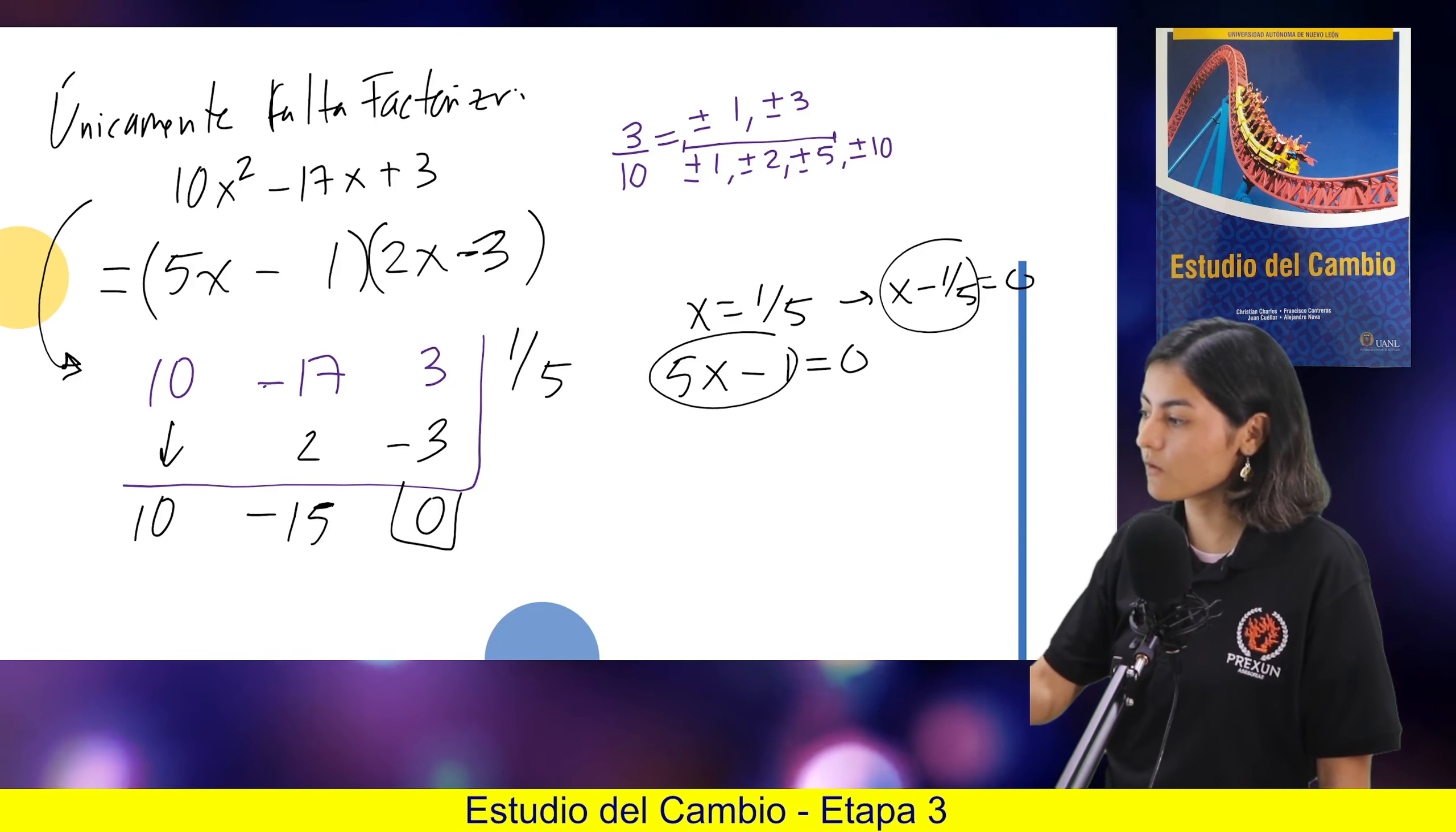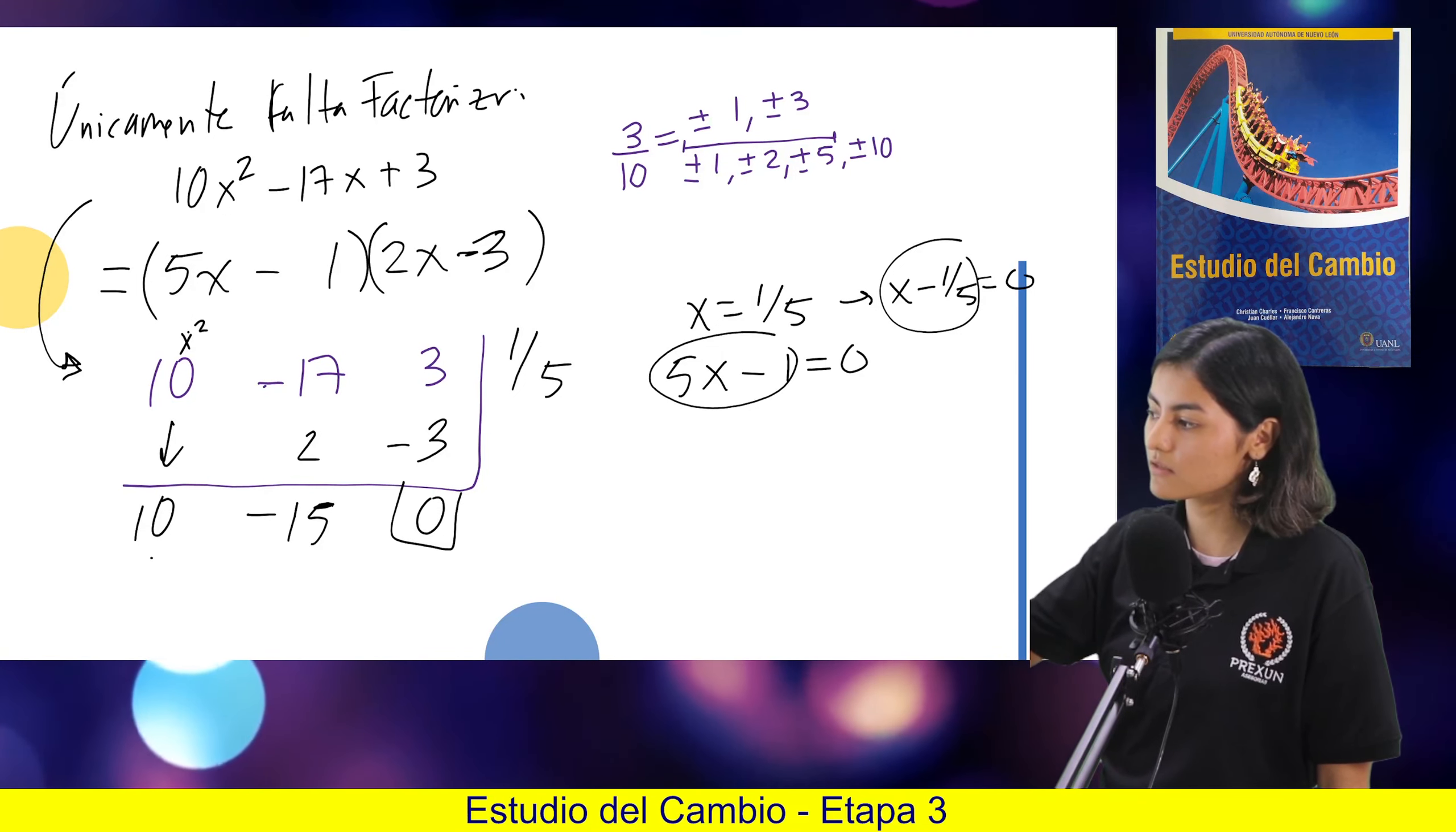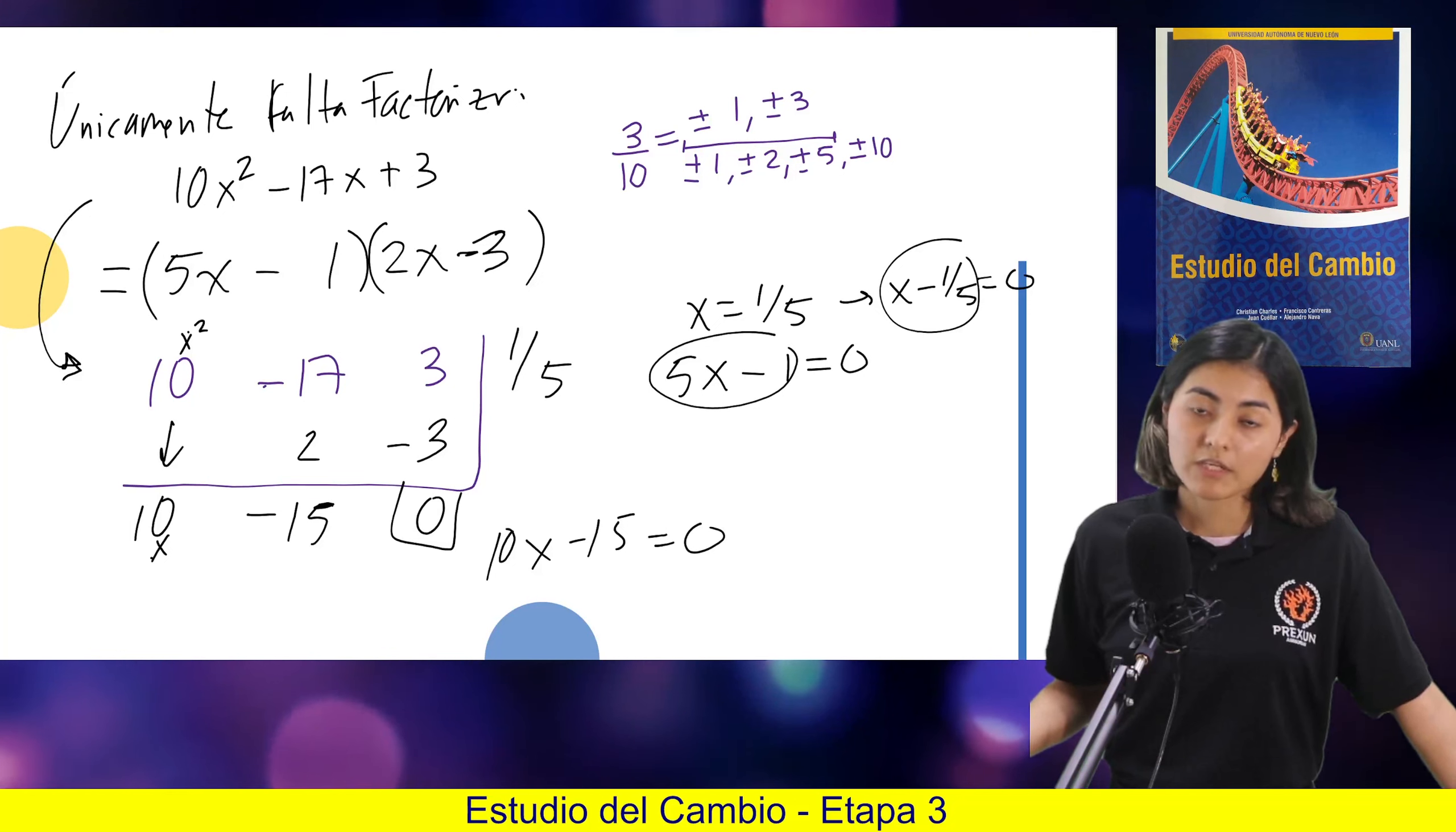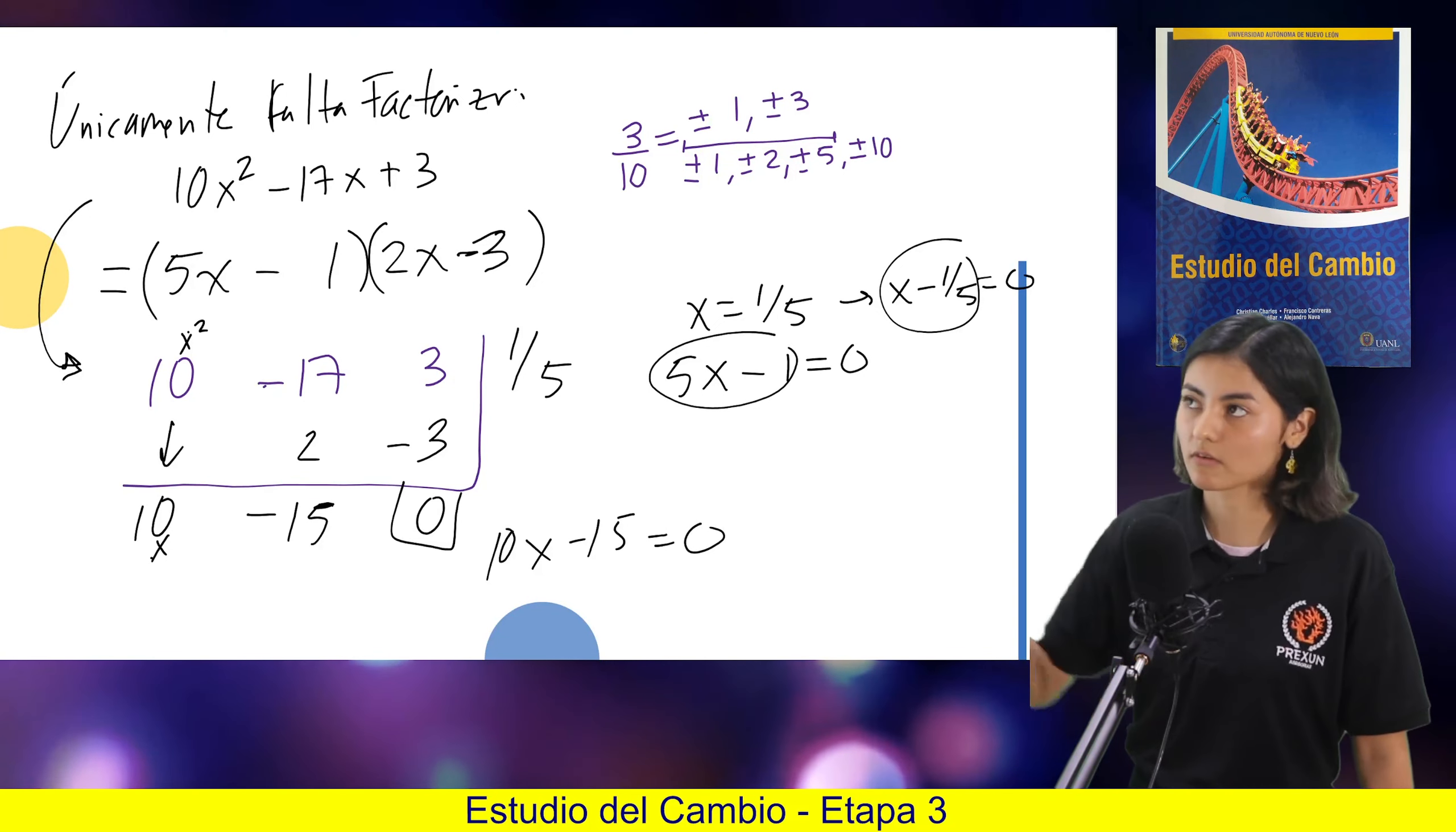Entonces, así podríamos encontrar otro factor. Y ya de aquí, recuerden, si esta era x cuadrada, pues ahora esta es x. Entonces, de aquí ya podríamos despejar la x de ahí, y sabríamos quién es la otra raíz, y llegaríamos a 3 medios.